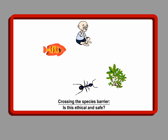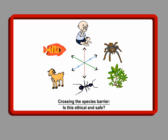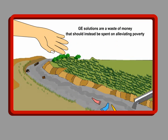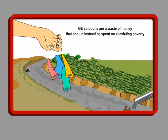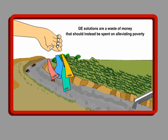Inserting human genes into plants, as in the case of farmer rice, is crossing the species barrier. This has serious moral, ethical, religious, health, and scientific implications. In fact, these so-called GE solutions are totally unnecessary and a waste of good money better spent on more effective and worthy solutions like alleviating poverty.